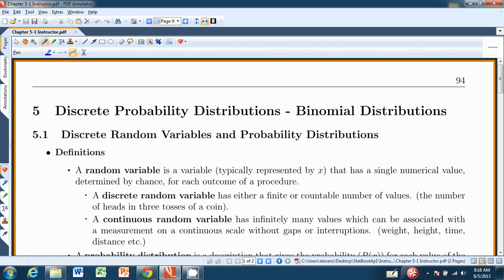Hi there, and welcome to chapter 5.1 from the Introduction to Statistics Think and Do book. Here we talk about some discrete random variables and their associated probability distributions.